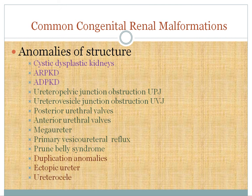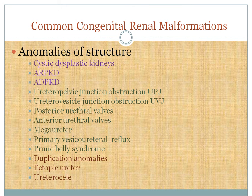Starting with structural anomalies: cystic dysplastic kidneys, autosomal recessive polycystic kidney disease (ARPKD), and autosomal dominant polycystic kidney disease (ADPKD). It's important to understand that ARPKD does not exclusively present in children. Epidemiologically, one-third present before age two, one-third before age 20, and one-third after age 20. Similarly, ADPKD can occasionally be seen in children, though it more commonly presents in the fourth or fifth decade when end-stage renal disease develops.